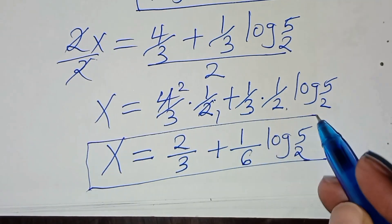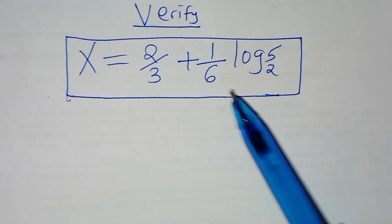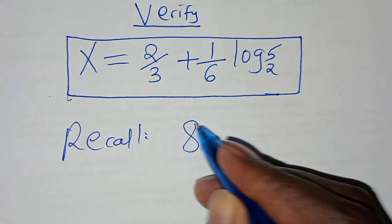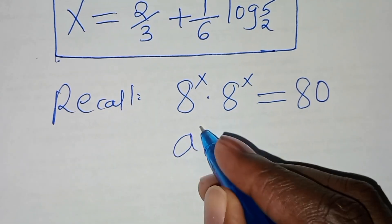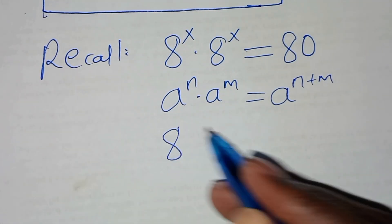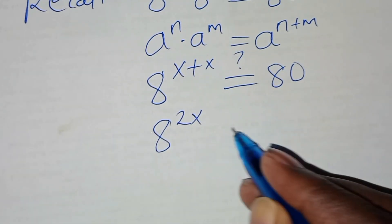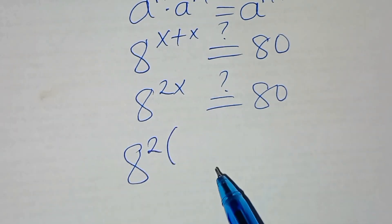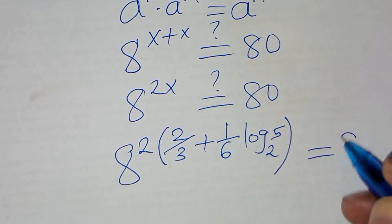Now this is the value of x. Let's verify that this value of x, which is 2/3 plus (1/6)·log base 2 of 5, actually satisfies the equation. Recall that 8 to the power x multiplied by 8 to the power x should give us 80, which simplifies to 8 to the power 2x equal to 80. Let's substitute the value of x, which is 2/3 plus (1/6)·log base 2 of 5.